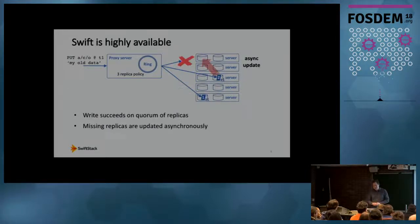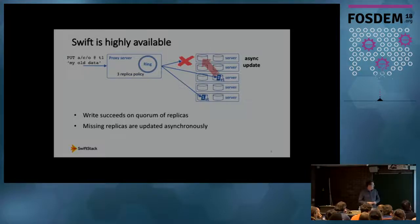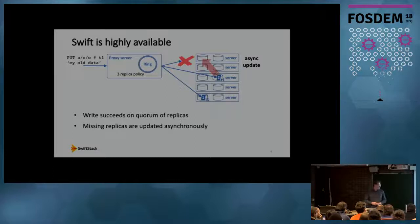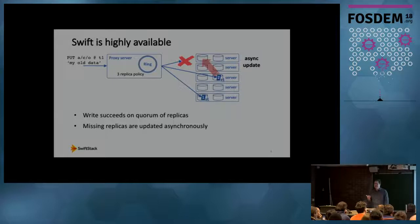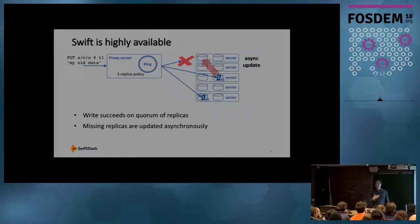Swift is highly available. It will continue to accept writes and serve read requests even when one or more storage pool devices has failed. In a three-replica storage policy, Swift considers a write successful if two of the three replicas — a quorum — have been written to disk. If the third replica fails due to a network failure, disk failure, or congestion, we still have two replicas and Swift considers that a quorum. Background asynchronous processes continually work to replace missing replicas by copying from existing ones.